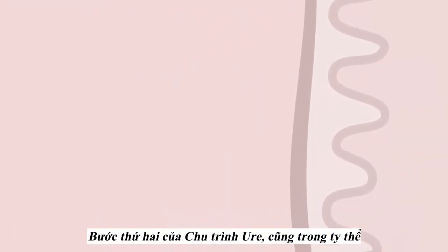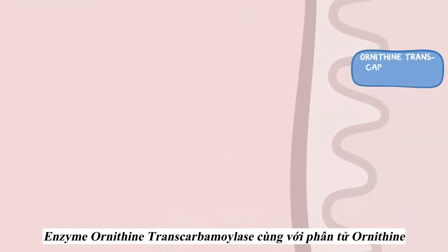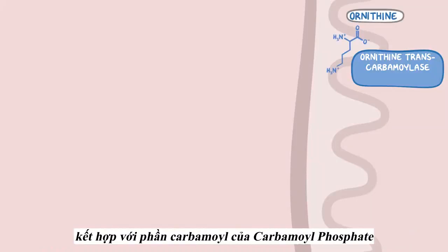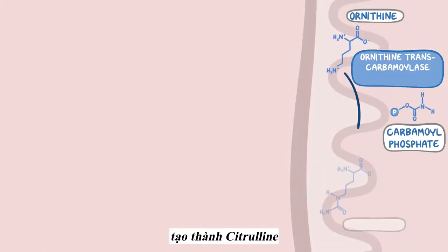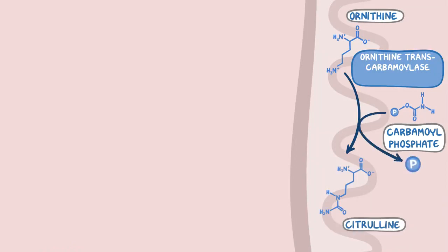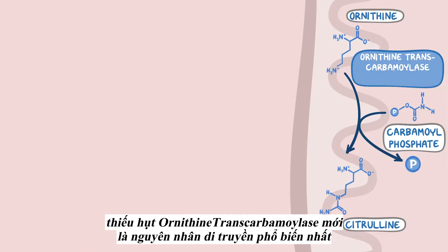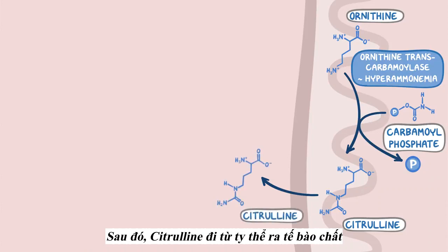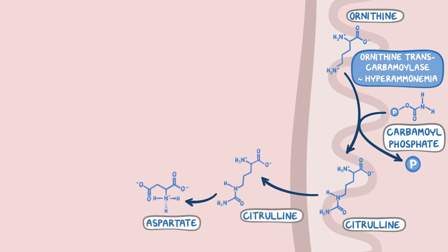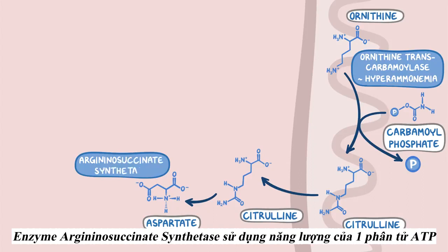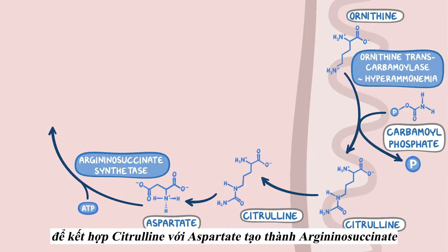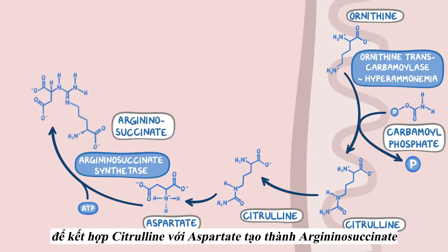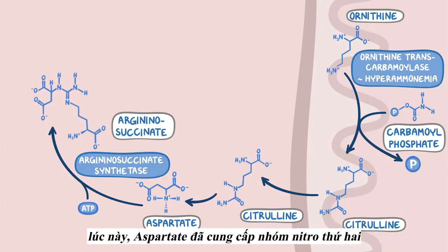In the second step of the urea cycle, also in the mitochondria, the enzyme ornithine transcarbamoylase combines ornithine with the carbamoyl part of carbamoyl phosphate to form citrulline, releasing free phosphate in the process. Deficiency of ornithine transcarbamoylase is the most common genetic cause of increased ammonia levels, or hyperammonemia. Next, citrulline goes from the mitochondria to the cytoplasm, where it meets up with aspartate. The enzyme argininosuccinate synthetase uses the energy of an ATP molecule to combine citrulline with aspartate to make argininosuccinate. Now aspartate has provided the second and final nitrogen group, which will be part of the final urea structure.